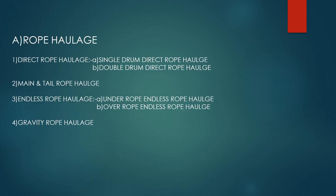Rope haulage: 1. Direct rope haulage — A. Single drum direct rope haulage. B. Double drum direct rope haulage. 2. Main and tail rope haulage. 3. Endless rope haulage — A. Under rope endless rope haulage. B. Over rope endless rope haulage. 4. Gravity rope haulage.